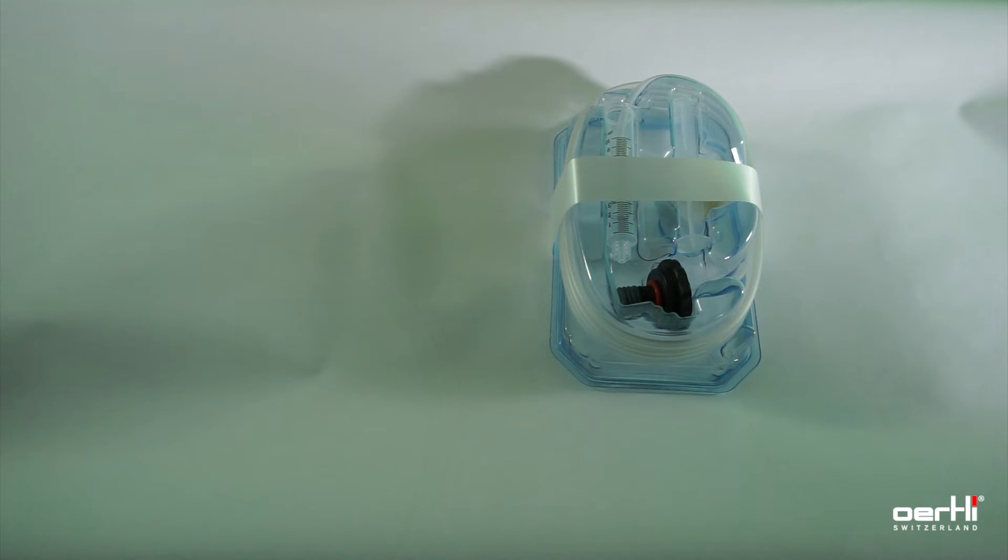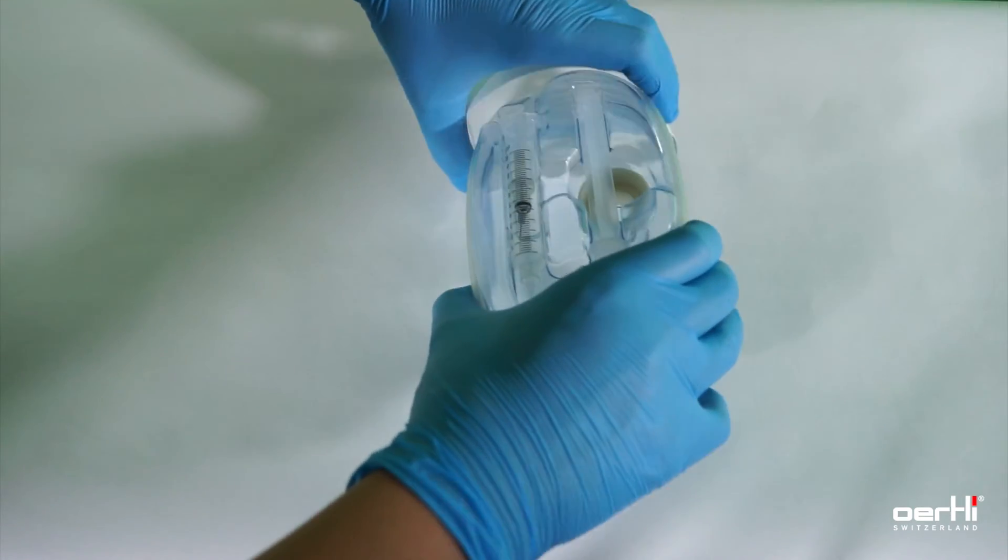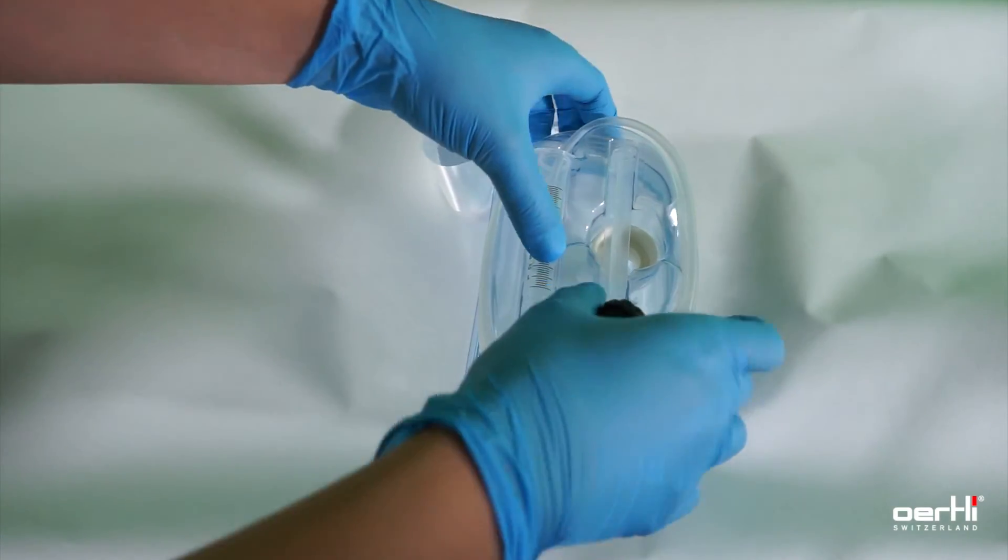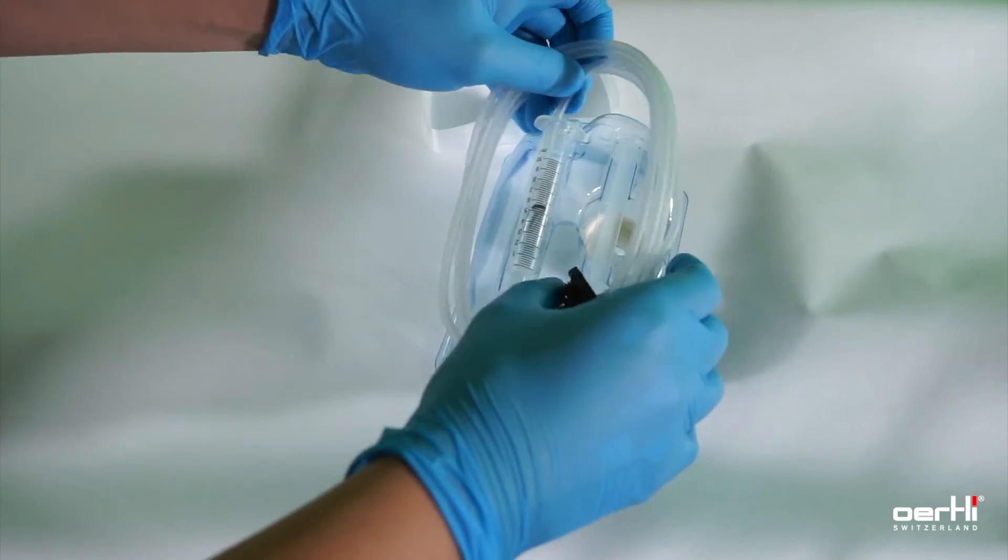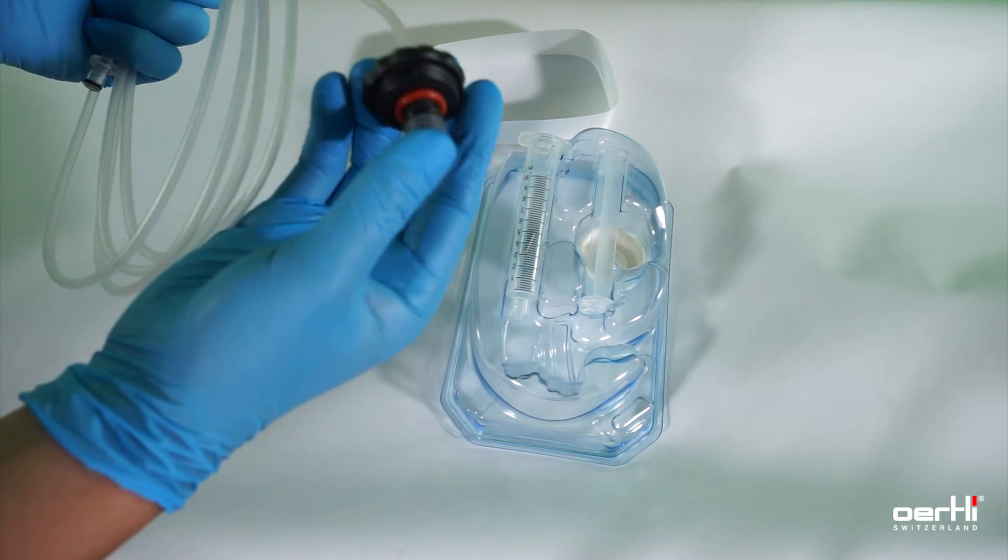For silicon oil extraction, you use the same set as for injection. It comes with the black syringe adapter and the tube containing the plunger stopper.